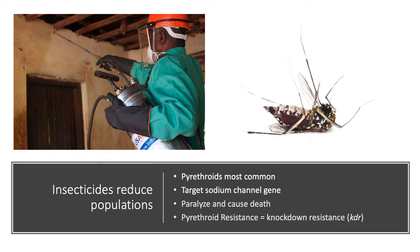The most common type is a class called pyrethroids. These work by targeting the voltage-gated sodium channel gene, which is responsible for proper nerve function. Pyrethroids cause the insects to become paralyzed and to die. Due to this paralyzing phenotype, pyrethroid resistance is known as knockdown resistance, or KDR.